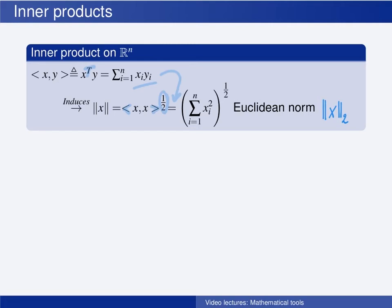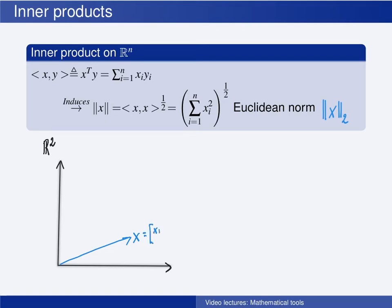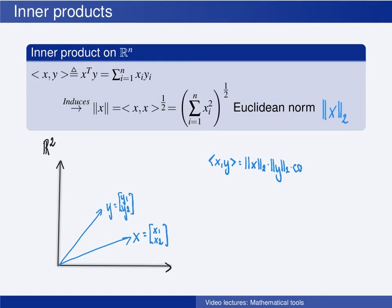Let us illustrate this in the two-dimensional case. Consider two elements in R2: x, which has two elements x1 and x2, and y, which has elements y1 and y2. You may remember that we have this relationship for two-dimensional vectors: the inner product between two two-dimensional vectors x and y equals the Euclidean norm of x times the Euclidean norm of y times cosine of theta, where theta is the angle from the vector x to the vector y. This illustrates why we say that the inner product gives us the concept of an angle.